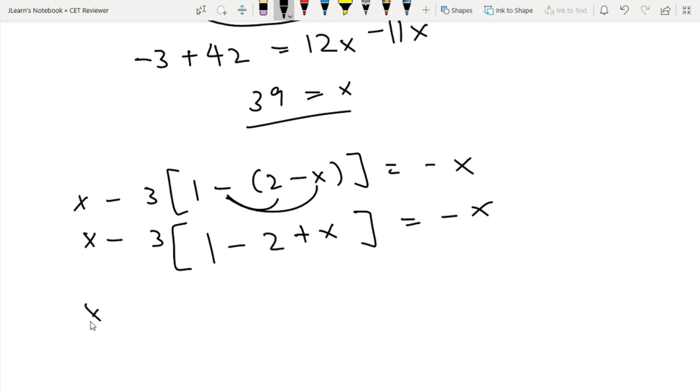Then again, we distribute. So X, then we distribute this. This will be negative 3 plus 6 minus 3X is equal to negative X.